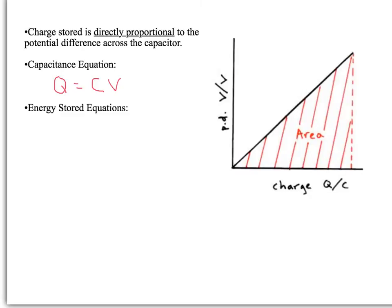To calculate the area of this triangle, which will be the energy, it's the area of a triangle, so half base times height, so half QV. Because of this equation we have above it, there are several different forms. If we substitute in the above for Q, we have half CV squared.